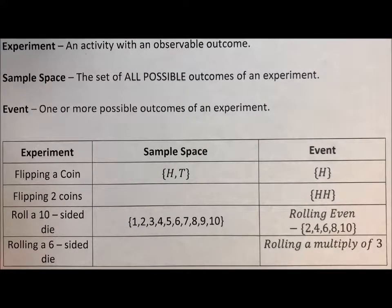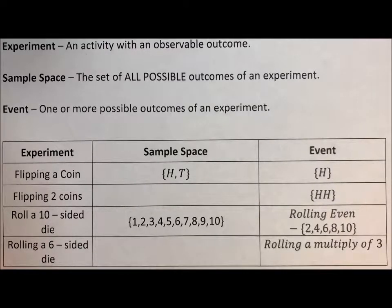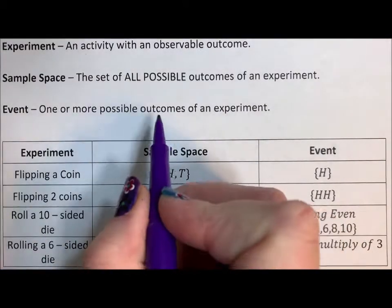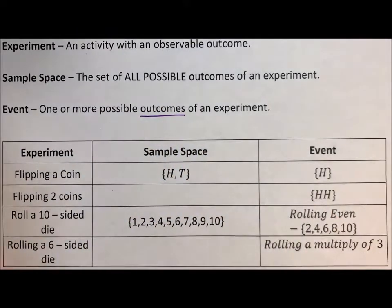We're talking about an experiment, which is some sort of activity with an observable outcome. The sample space — you're going to hear a lot about sample space — that's all possible outcomes in an event. Sometimes it's called an event, sometimes it's called the outcome. It's just one or more possible outcomes.